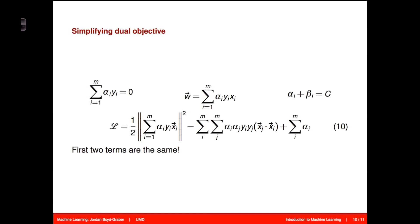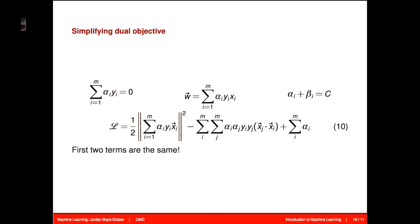And so now we just have minus one half, sum over all of the data twice, α_i, α_j, y_i, y_j, the dot product of the features, x_i, x_j. And this ends up being nearly identical to the separable case, except that we now add the constraint that the α_i's must be less than or equal to C.